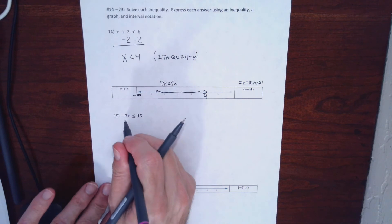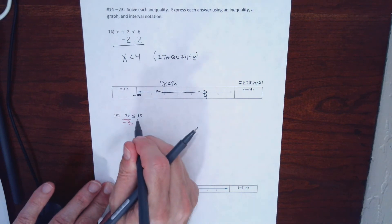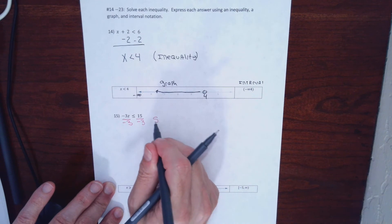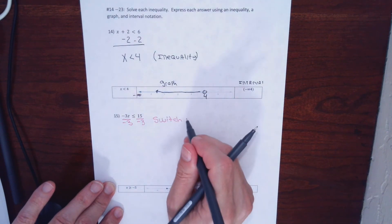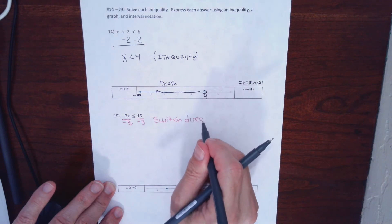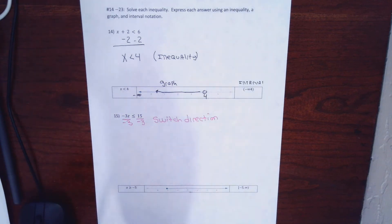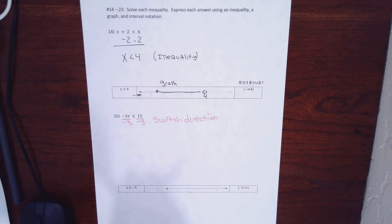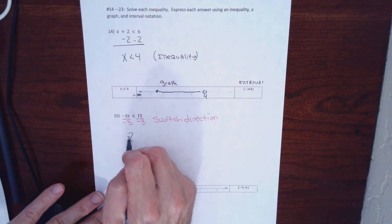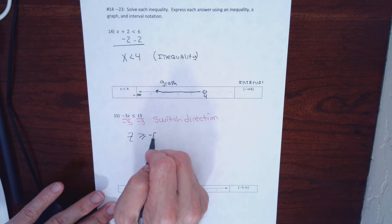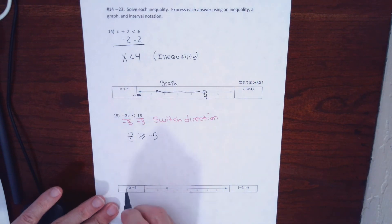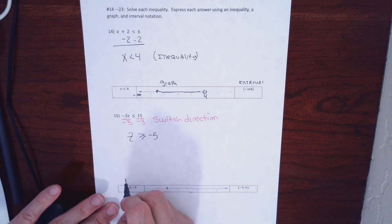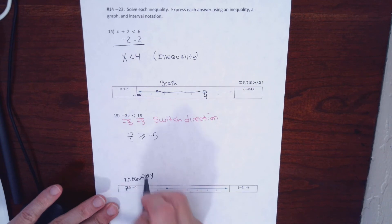Problem 15: I'm going to isolate z by dividing both sides by negative 3, and this is exactly when I switch the direction of my sign. If I have to multiply or divide to isolate the variable by a negative, I switch the direction. If I add or subtract, I don't switch the direction. If I multiply or divide by a positive, I don't switch the direction. But if I multiply or divide by a negative, I have to flip the direction of the sign. So this is my answer as an inequality. I wrote x when I should have written z — I won't penalize you for that on a test.